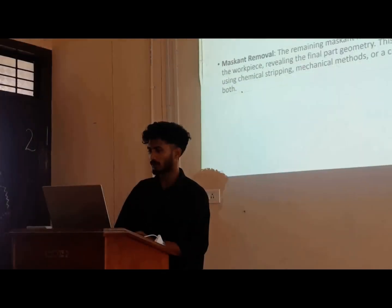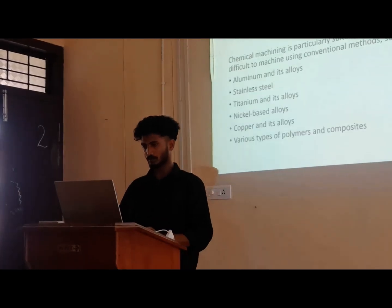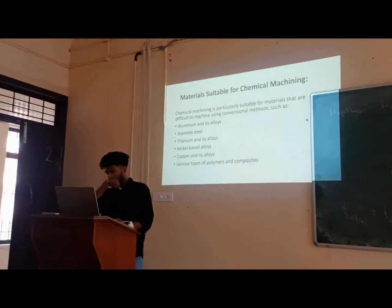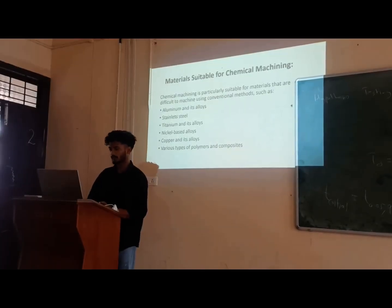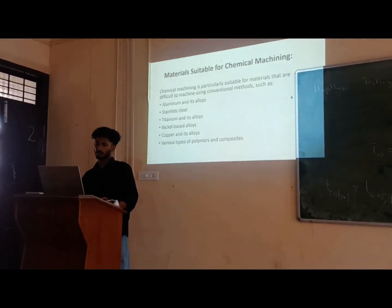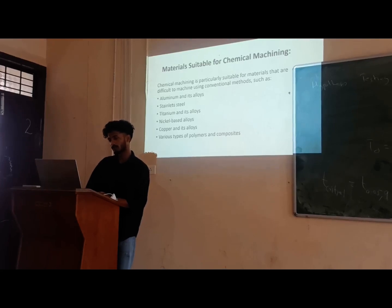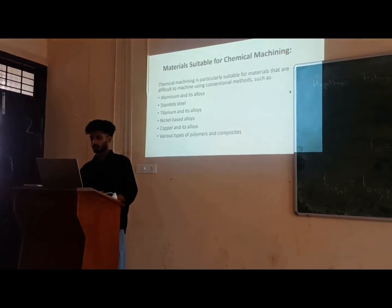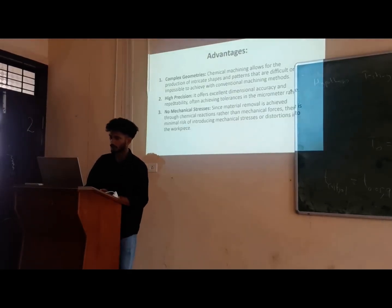The geometry should account for the chemical effect, including combinations of holes. The materials suited for chemical machining are similar to those used in conventional machining, such as aluminium alloys, titanium alloys, inconel alloys, and various composite components.